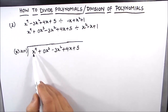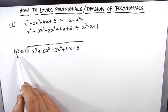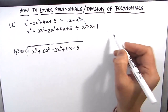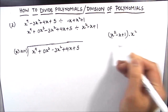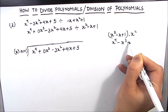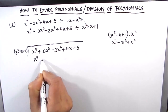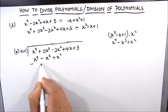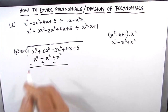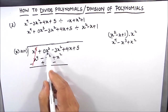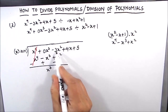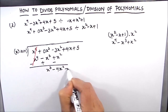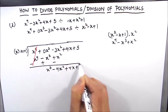Step two: divide the first term x to the power 4 by the first term of the divisor x squared. We need to multiply x squared by x squared, so we multiply the whole divisor by x squared, giving x to the power 4 minus x cubed plus x squared. Changing signs for subtraction: x to the power 4 cancels, 0 plus x cubed becomes x cubed, and minus 3x squared minus x squared becomes minus 4x squared. The quotient so far is x squared.